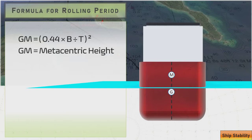That's G, the center of gravity of a vessel, and above it M, which is the transverse metacenter of a vessel.